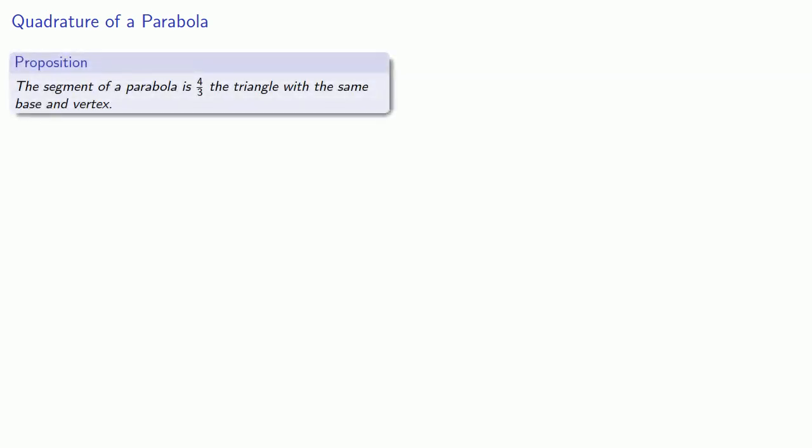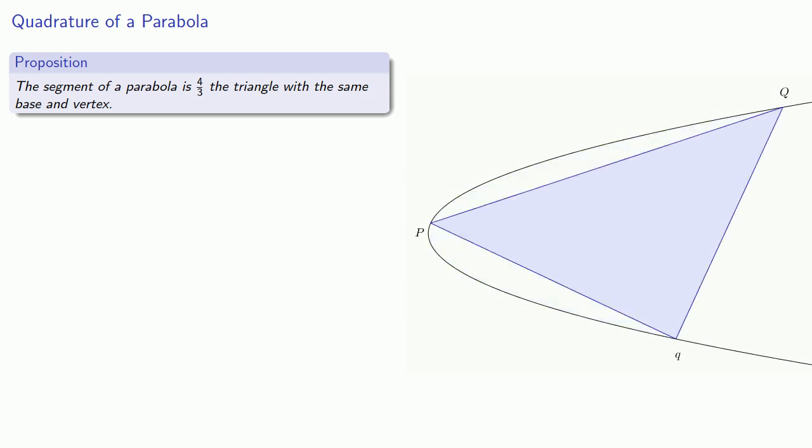Somewhat more comprehensible is Archimedes' results on the quadrature of a parabola, finding the area of a parabolic segment. And what Archimedes had to say about that, the segment of a parabola is 4/3 the triangle with the same base and vertex. Now in Archimedes' time, a vertex was where the diameter of a curve met the curve, and the diameter is any line that bisects parallel lines cutting the curve.